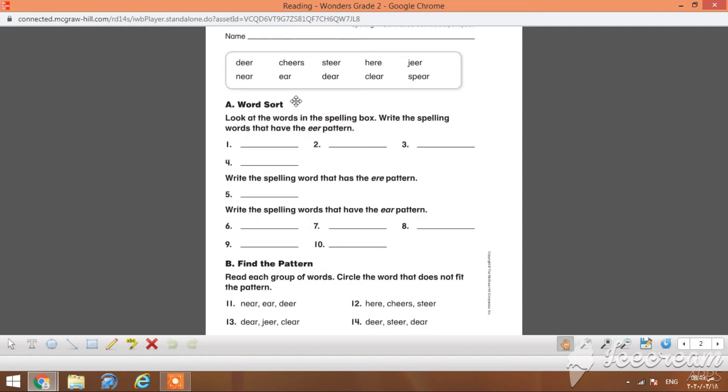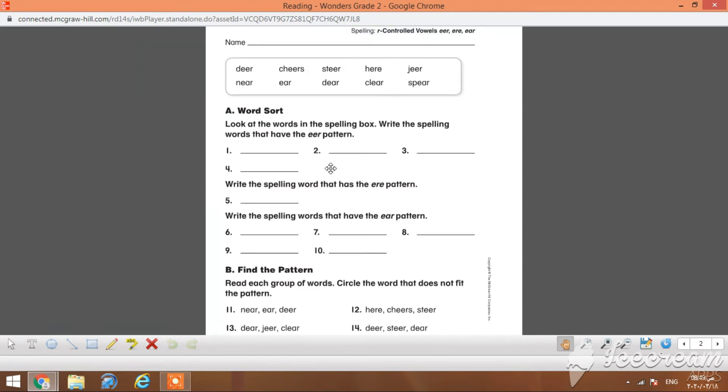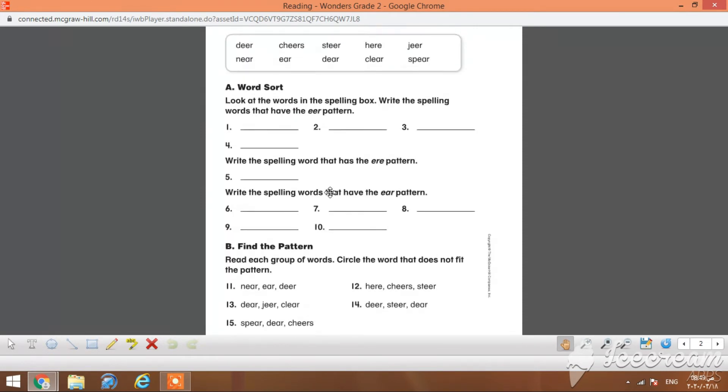Page 92, which is using the list of words starting from dear, near, cheers, ear, steer, here, jeer, dear, clear, and sphere. Look at the words in the spelling box. Write the spelling words that have the E-A-R pattern. Here you will have to write four words. Spell double-E-R pattern E-E-R, spell it here with the E-A-R pattern with one word, and lastly five words having the E-A-R pattern. Focus on the spelling.